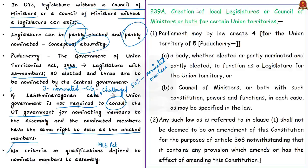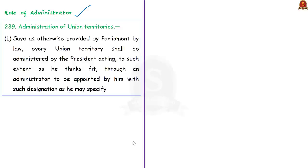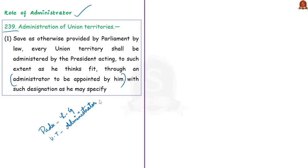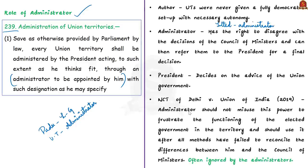The most controversial part is the role of the administrator. Article 239 says that every union territory shall be administered by the president through an administrator appointed by the president. In some union territories including Puducherry, the designation is lieutenant governor; in others it is simply administrator. The author says that union territories were never given a fully democratic setup with necessary autonomy — power is tilted towards the administrator. The administrator has the right to disagree with council of ministers' decisions and refer them to the president, who decides on the advice of the union government.